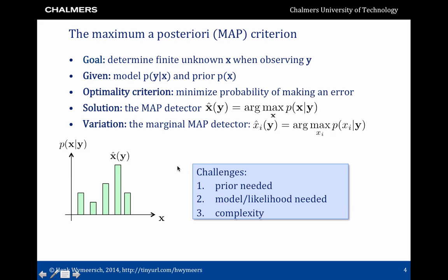There are some challenges related to the MAP detector. First, a prior is needed — in communications this is easy because we generate the inputs ourselves. Second, a likelihood function P(Y|X) is needed, because combined with the prior it gives rise to the posterior. In optical communication, finding a good model and thus a good likelihood function is the key challenge. Finally, complexity can be very high, because even if the likelihood and prior are known, evaluating the maximization or determining P(X|Y) in closed form can be hard.